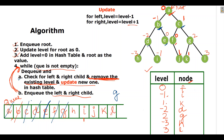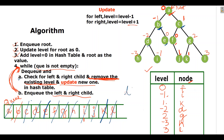The while loop runs again. Dequeue H — H doesn't have any child, nothing to update. Then I — also no children. Then J — J also doesn't have any left or right child. Then K — K also doesn't have any children. Now when we go to the while loop again, the queue is empty, so it will not go inside the while loop and will return our hash table containing all the bottom view elements.